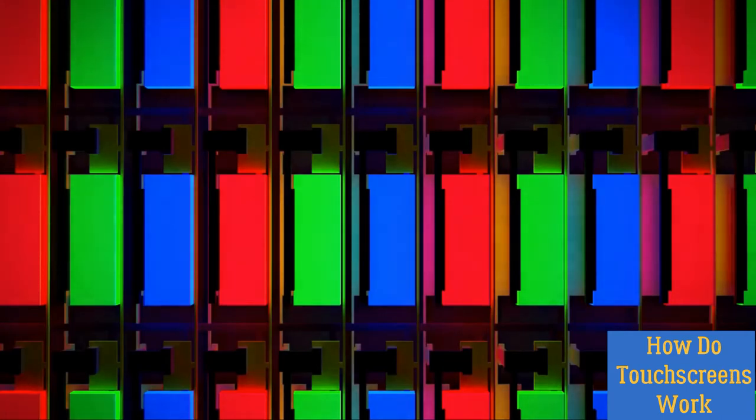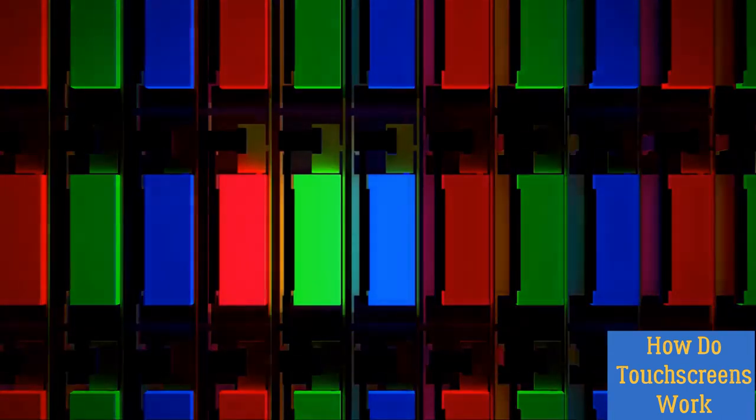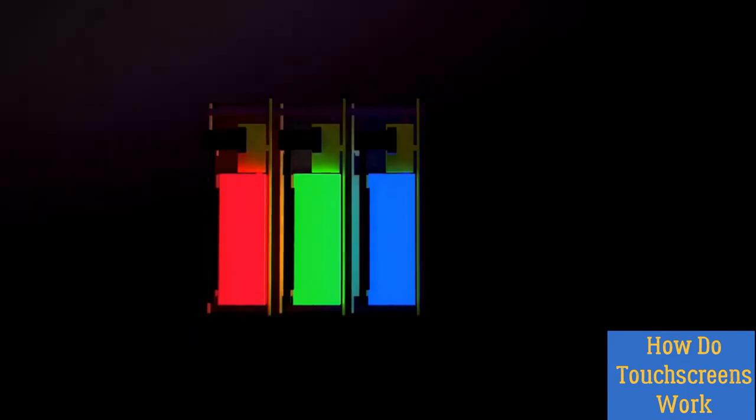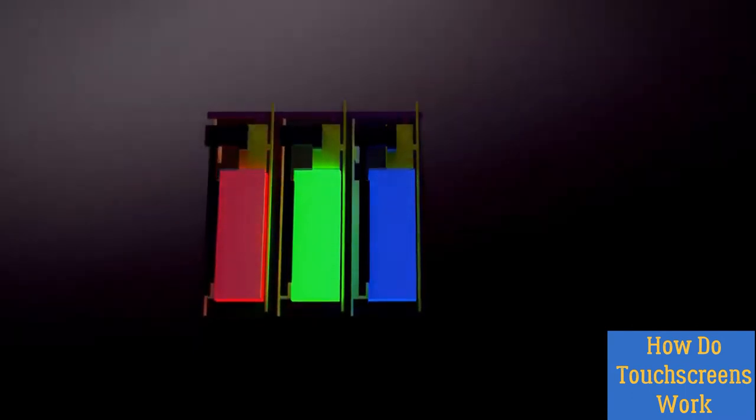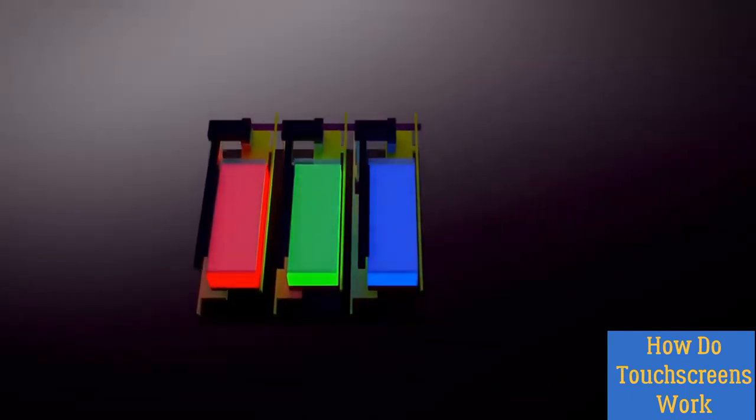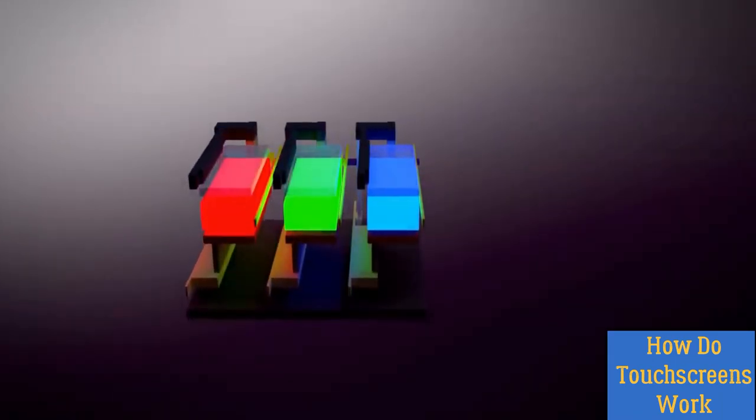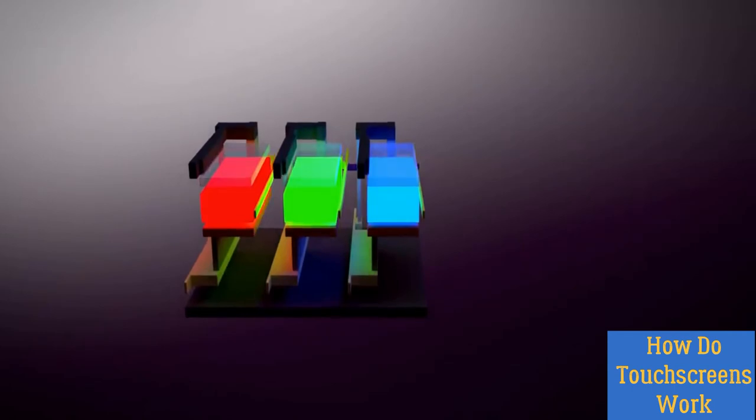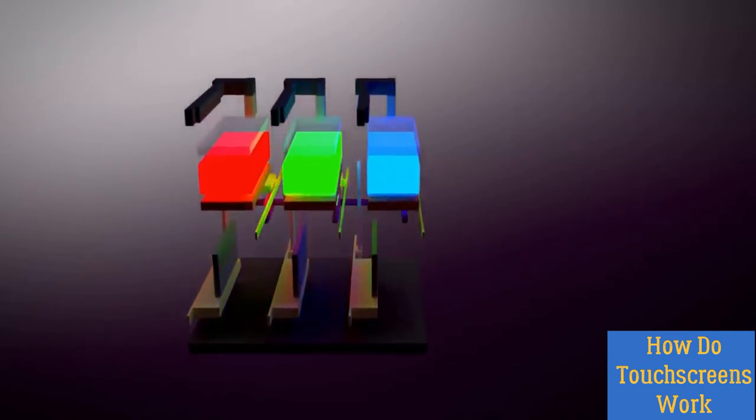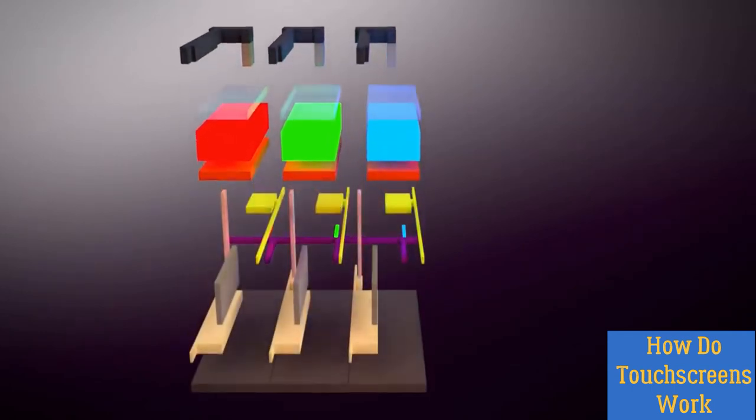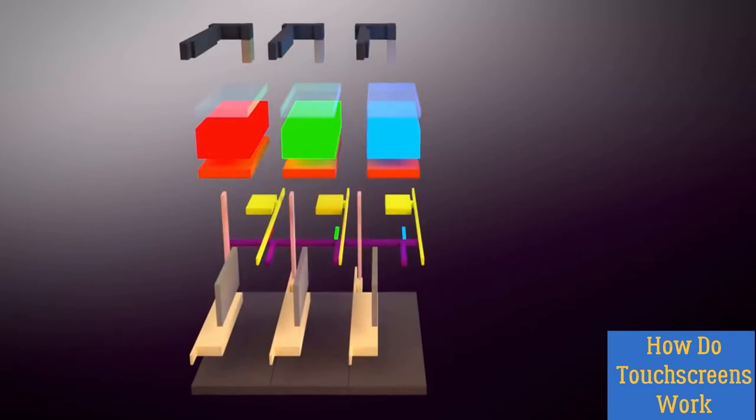OLED displays are composed of a massive grid of individual pixels, and in each pixel is a red, green, and blue subpixel. Each subpixel's light intensity is controlled by a small thin film transistor that acts as a dimmer switch. There are many layered structures in each subpixel, however explaining the function of each layer will have to be saved for a future episode.